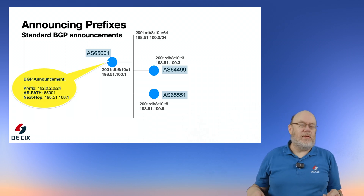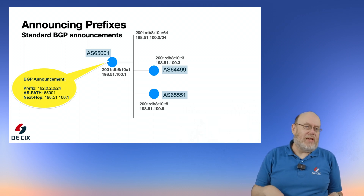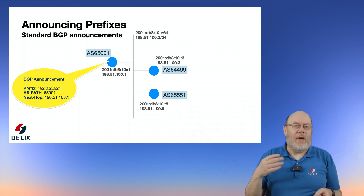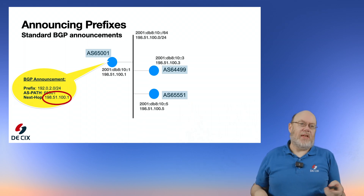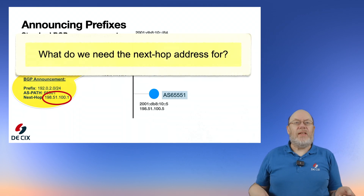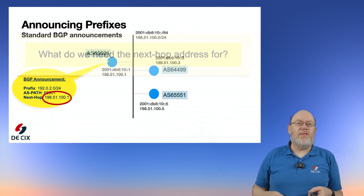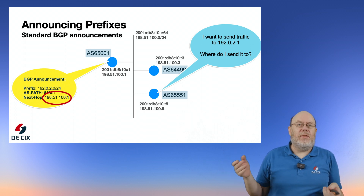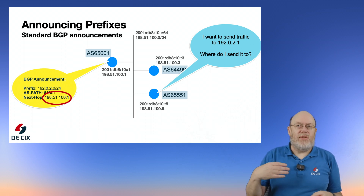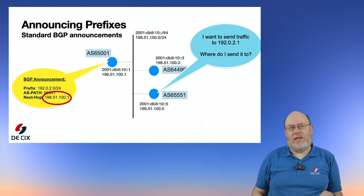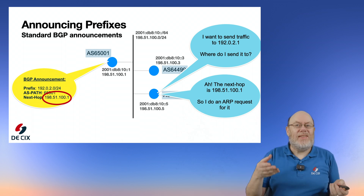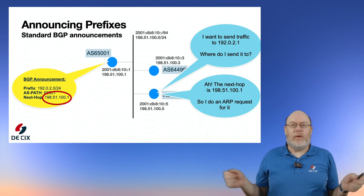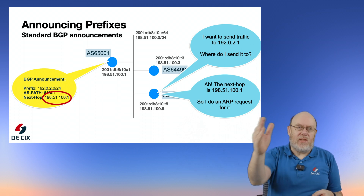When you announce a prefix — like here, an IPv4 prefix — you announce it with your AS path and also with your own address as the so-called next-hop address. This next-hop address is the important part for today. What do we need this next-hop address for? It's for other routers to send traffic to you. The router receives the BGP announcement and the prefix, wants to send traffic to one of the hosts in that prefix, and gets the next-hop address from its BGP table — for example, 198.51.100.1.